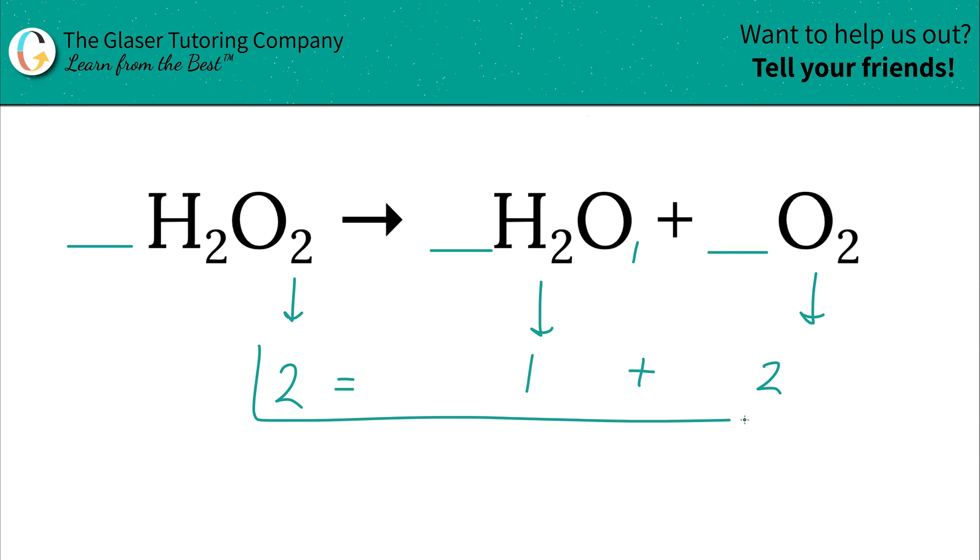So somehow this math statement has to be true, that two must equal three. Now obviously that's not a true statement. What I need to do is place a variable, a coefficient someplace, so that I can balance this.